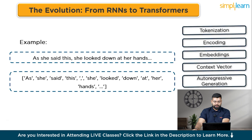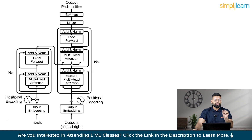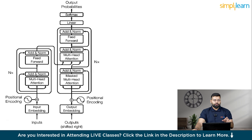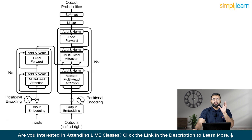Let's break down the transformer architecture. This architecture comprises an encoder and a decoder, each with multiple layers. In the encoder: first is input embedding, where the input text is tokenized and converted into vector representations. Next is positional encoding, which adds information about the position of each token. Then multi-head attention allows the model to focus on different parts of the input simultaneously. This is followed by an add-and-norm layer, then a feed-forward layer, and again add-and-norm. This structure is repeated N times.